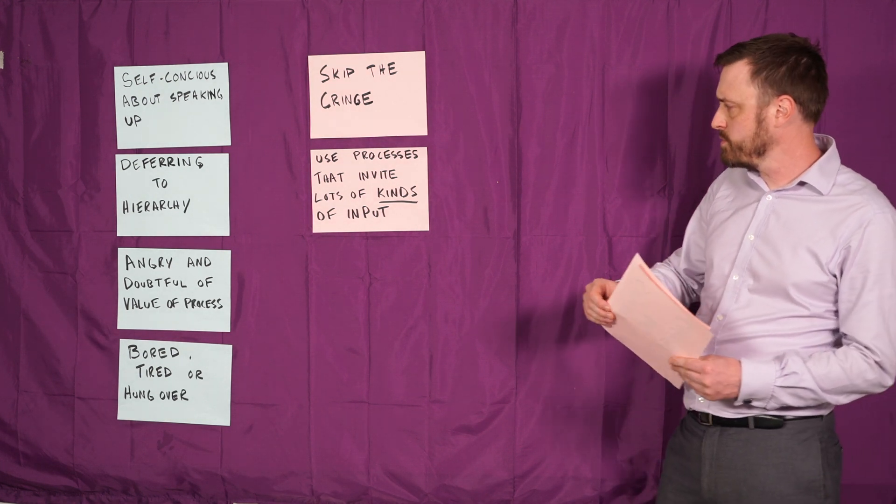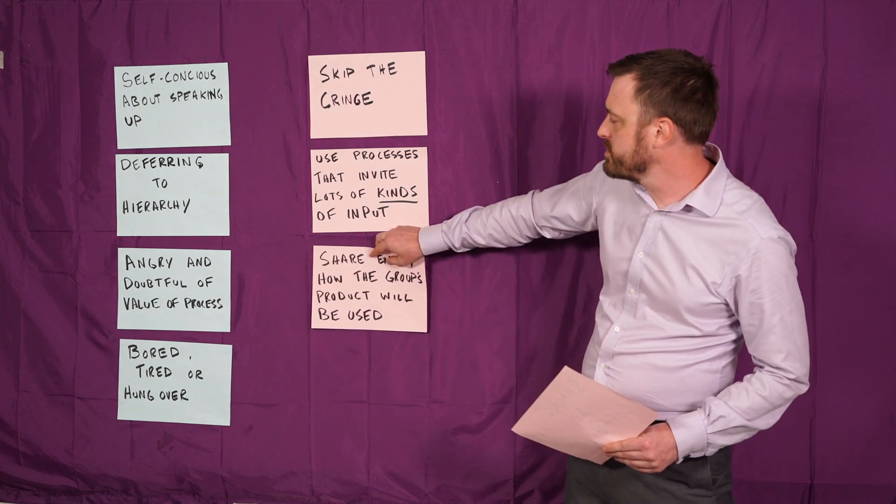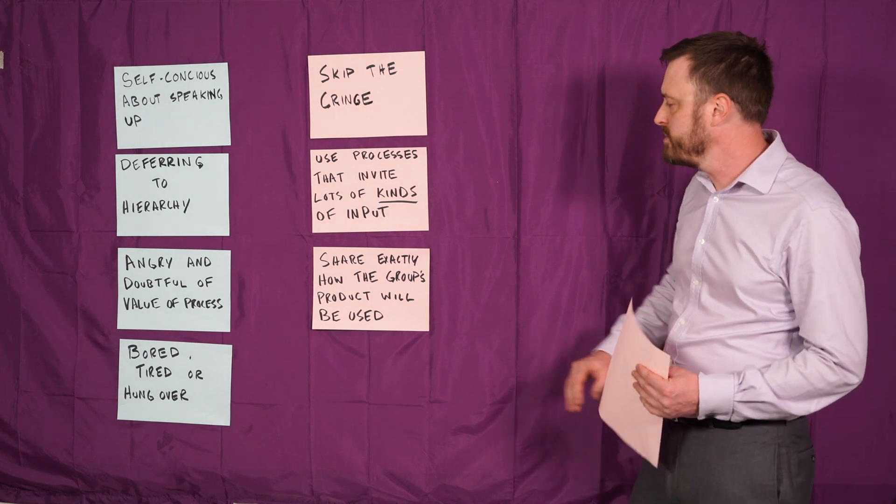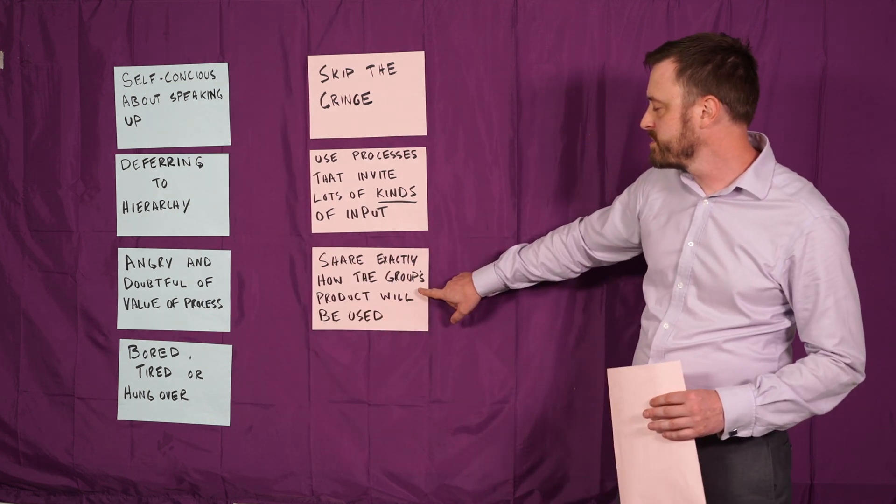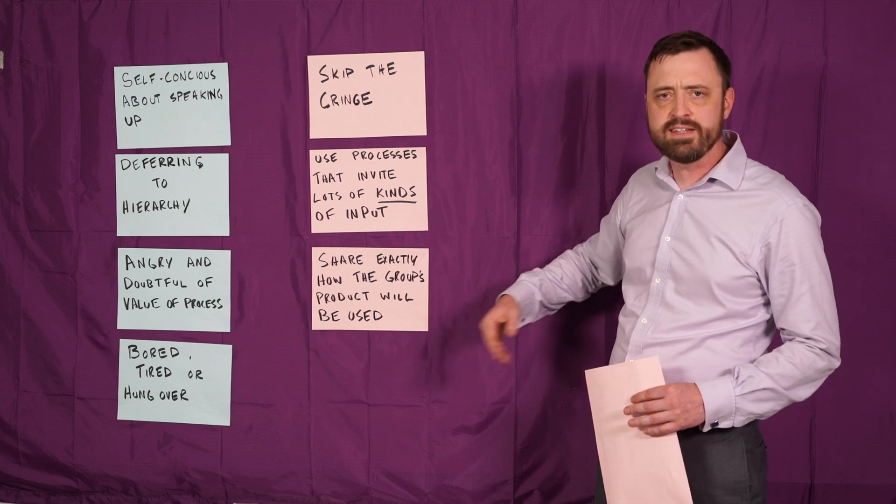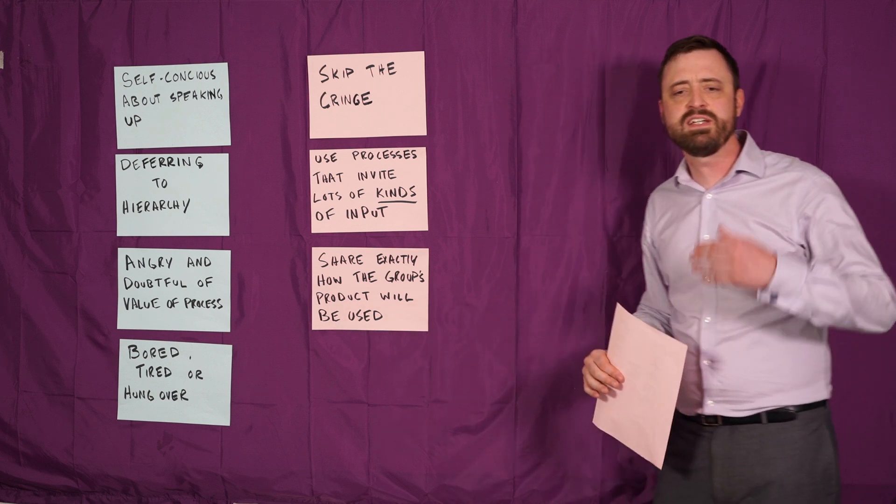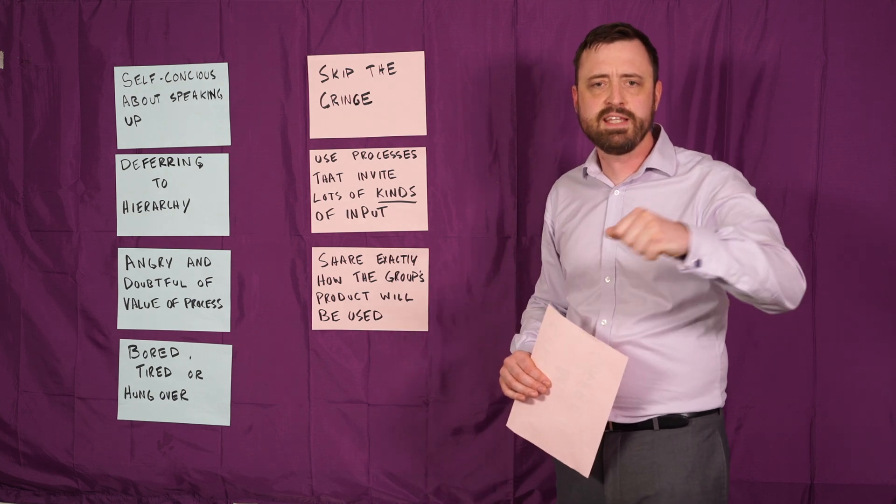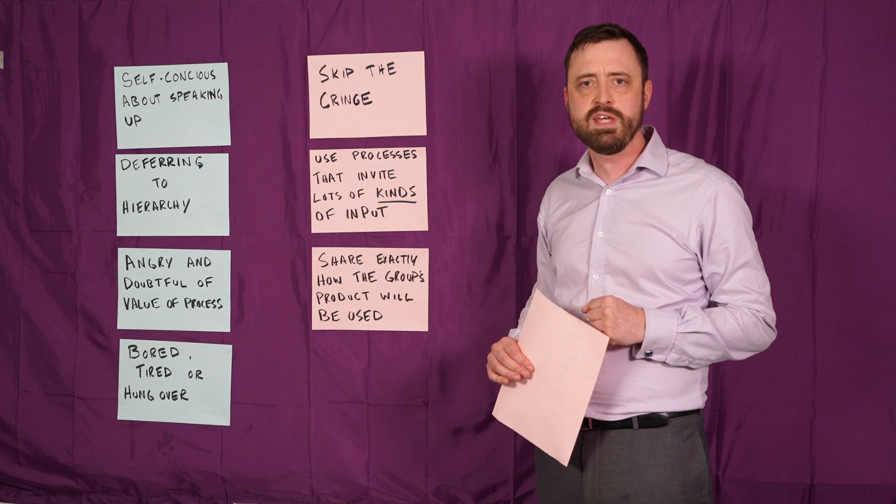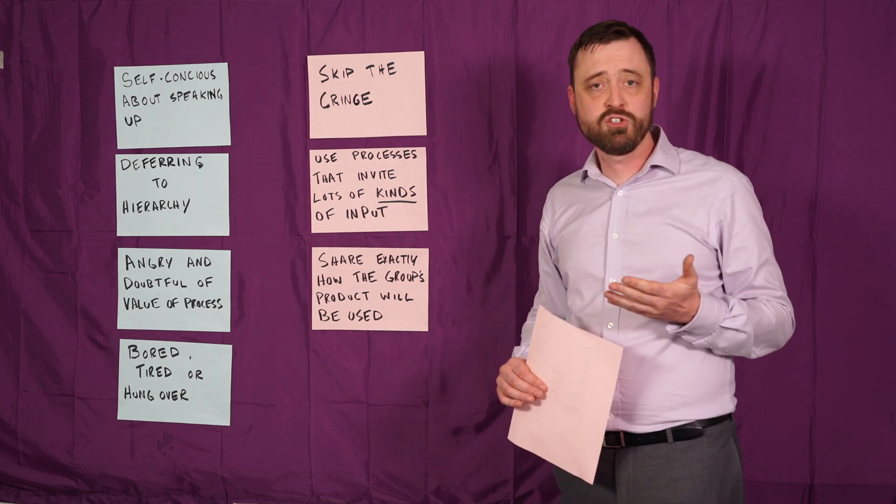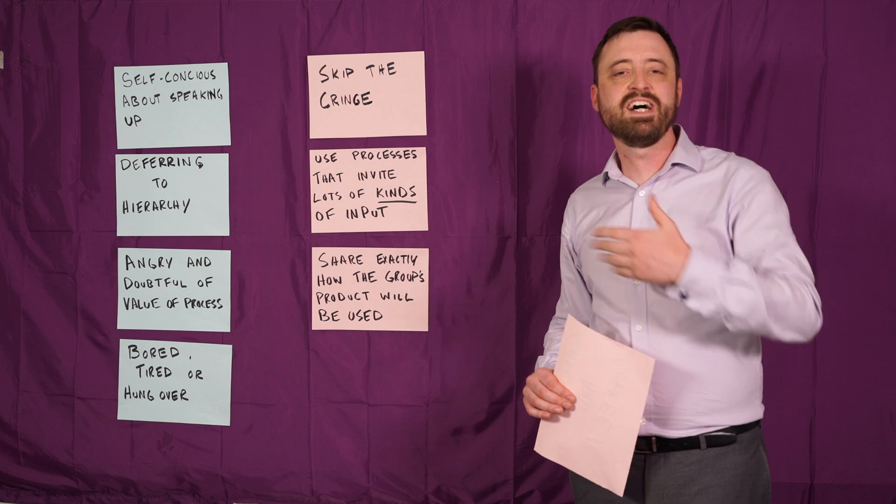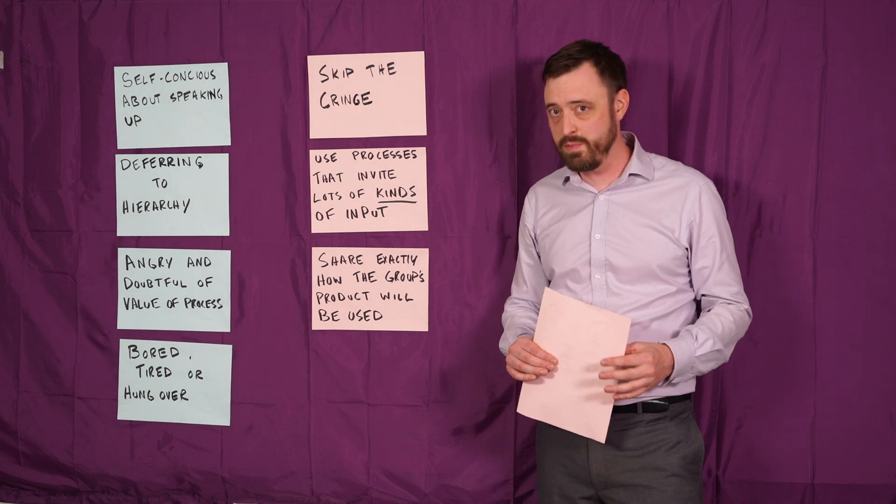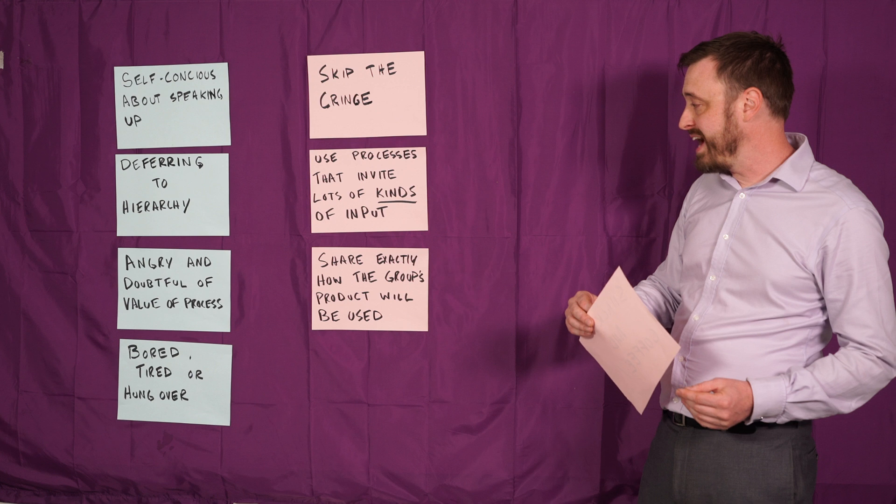The third method: especially when somebody's angrily doubtful of the value of engaging in the process, share exactly how the group's product will be used. This makes it more real to them and makes it clear it's not just a tick-box exercise. As a facilitator, I'll often say 'what I'm going to do when we're done today is take the ideas you came up with directly to the board for use in their strategic planning process.' I only say that if it's actually true, but whatever is true, I say it so it's clear it's not just going in a file folder.